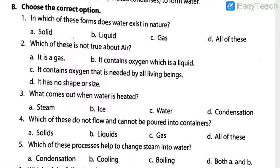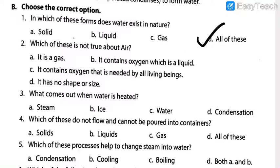Let's get started. Choose the correct option. Question one: in which of these forms does water exist in nature? Solid, liquid, gas, or all of these. Does water become solid? Yes, because ice is solid. Does water exist as liquid? Yes, water naturally is in liquid form. Does it become gas? Yes, when evaporation takes place or when we heat the water. So here we have to take option — all of these — because water exists in all these forms in nature. That is why the name of the chapter is solids, liquids and gases.